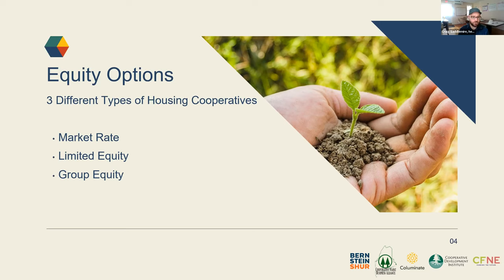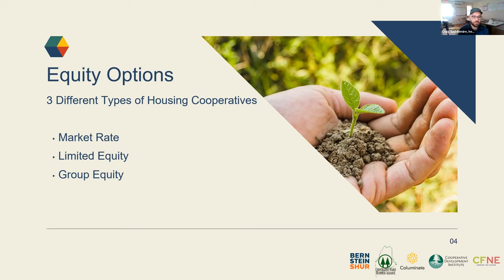Group equity is the full nonprofit version of a housing cooperative, where any equity developed through the project is retained by the corporation — it's not extracted by individual residents in the form of dividends, interest, or profit. That group equity is still valuable and can be leveraged, for example borrowed against, for the benefit of the group. The financial benefit to residents is savings and quality housing, with operating costs kept down, not returns on investment. Those are the three different types of housing co-ops.